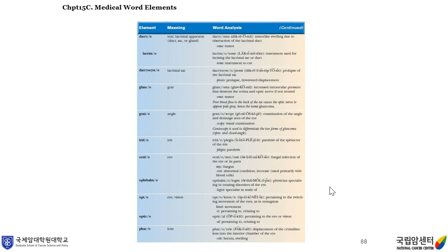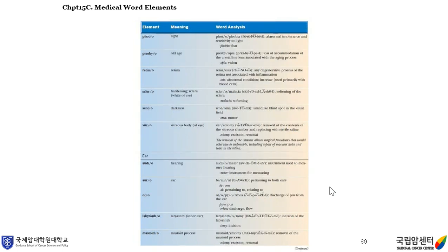Gonie means angle; gonioscopy is the examination of the angle and drainage area of the eye, iris, and eyelid. Ocula or ophthalmo means eye; opt or optic means eye and also vision. Phac means lens; phacocele is the displacement of the crystalline lens into the interior chamber of the eye. Photo means light. Presby means old age; presbyopia means loss of accommodation of the crystalline lens associated with the aging process. Retina; sclero means sclera or hardening. Scut means darkness; scotoma is an island-like blind spot in the visual field. Vitru means vitreous body.